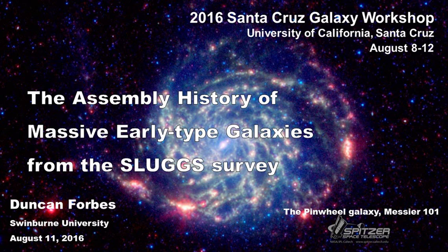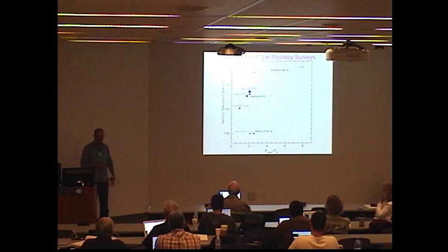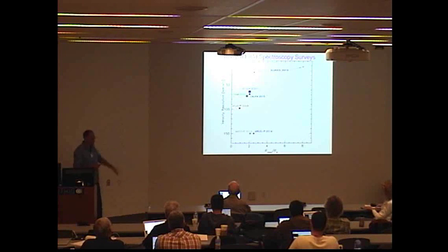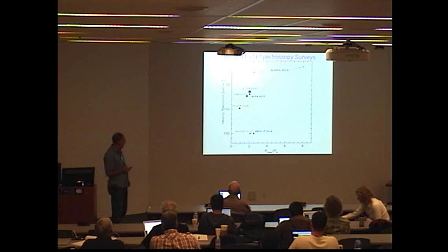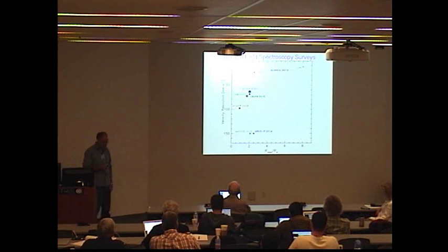The SLUGS survey wanted to start off with this figure of merit for integral field spectroscopy surveys. It shows velocity resolution on the y-axis and how far out you go in a galaxy in terms of effective radius.